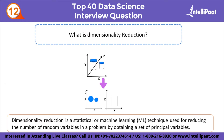What is dimensionality reduction? Dimensionality reduction is the transformation of data from a high-dimensional space into a low-dimensional space so that the low-dimensional representation retains meaningful properties of the original data. In machine learning classification problems, there are often too many features, making it hard to visualize and work with the training set. Sometimes most features are correlated and hence redundant. Methods used for dimensionality reduction include PCA (Principal Component Analysis) and LDA (Linear Discriminant Analysis).